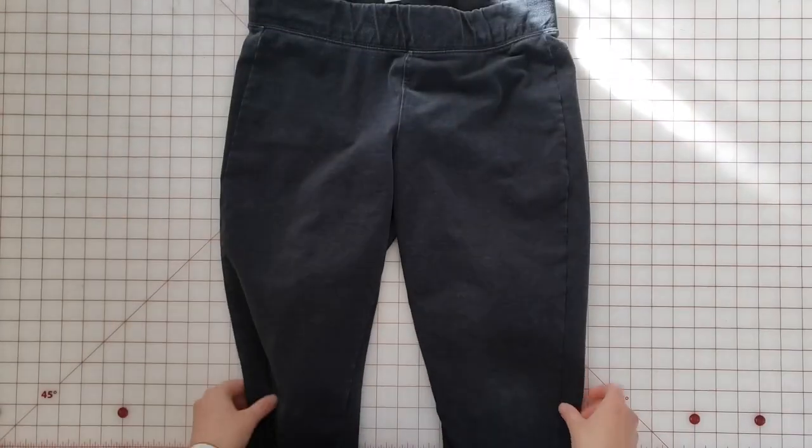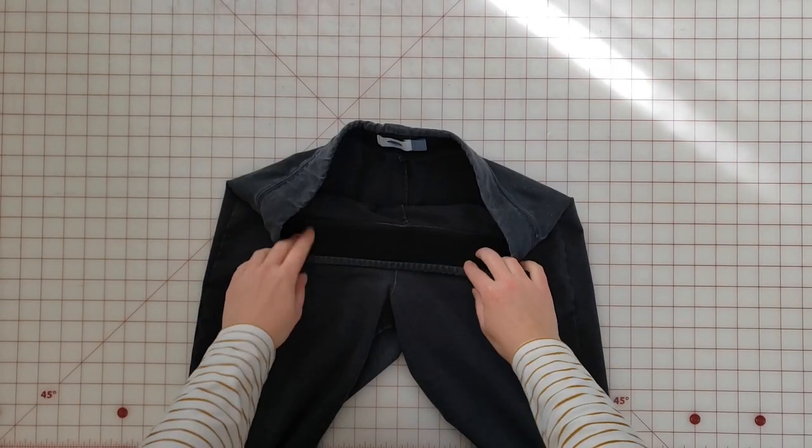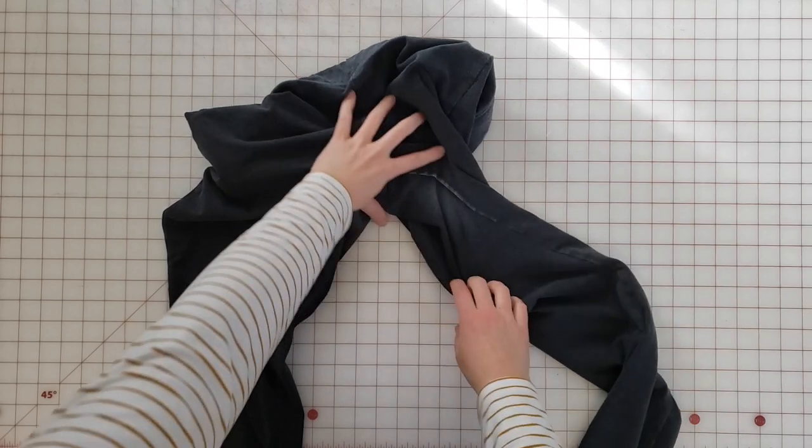So today's tutorial is a really simple self-drafting project. I'm going to show you how to clone a pair of leggings. This has been on my to-do list for a while because I have a pair of leggings that I bought from Old Navy maybe like five, six, seven, or eight years ago. They've held up really well but are starting to show their wear with faded spots on the thighs where my thighs rub together.